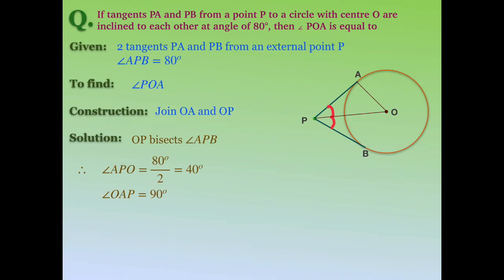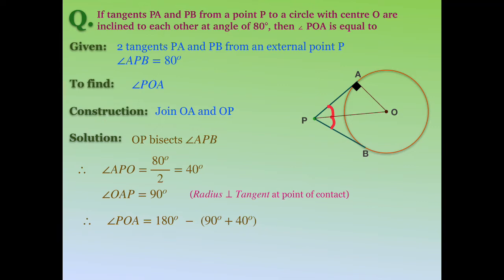We know angle OAP is 90 degrees because it is the angle between the radius and tangent at the point of contact. Using the angle sum property in triangle OAP, angle POA equals 180 degrees minus the sum of the other two angles, that is 90 and 40 degrees, which gives angle POA equal to 50 degrees.